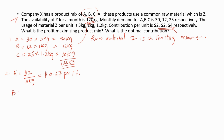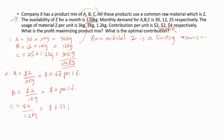For product B, the contribution per unit is $2 divided by 1 kg of material Z, which equals $2 per limiting factor. For product C, the contribution is $4 divided by 1.2 kg, which equals $3.33 per limiting factor. Always remember: when it comes to limiting factor analysis, use the contribution per limiting factor, not the contribution per unit.